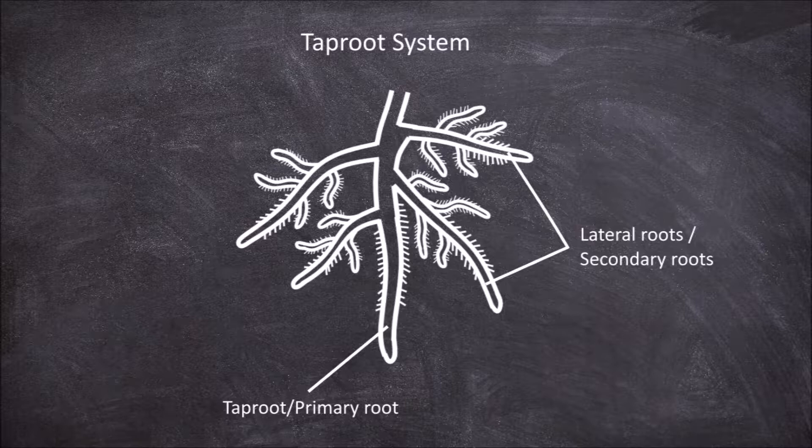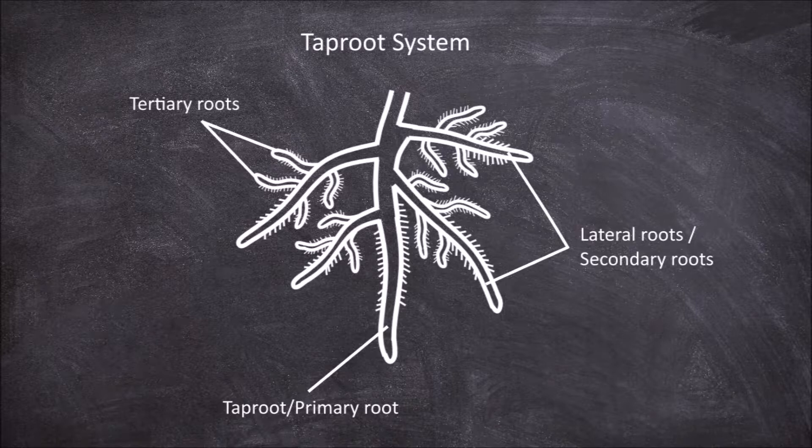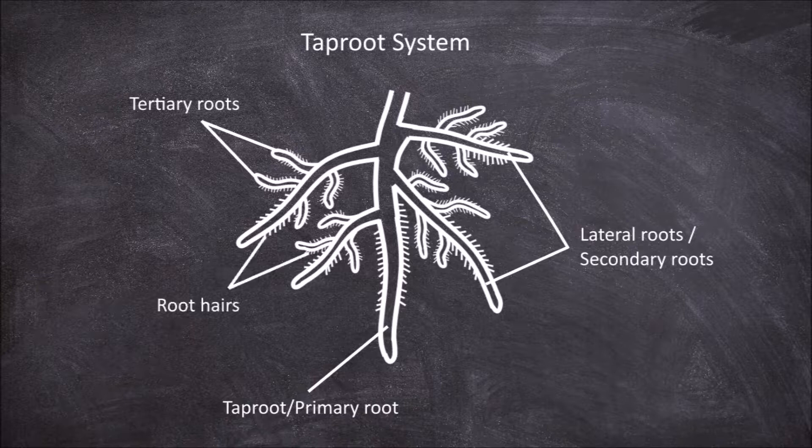Branches from the secondary roots are called tertiary roots. Along these roots you will find root hairs which increase the surface area for absorption of water and minerals.